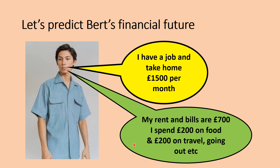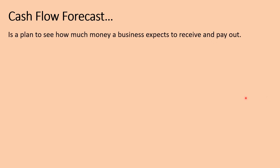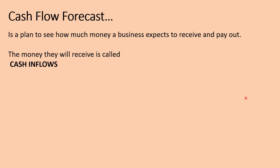We're going to look at businesses in just the same way as we've looked at Bert. We're going to learn some specific words to use when doing it and a process for how to do the calculations. Bear in mind it is just looking at how much money you've got in, how much money you've got out, and working out the difference. The money a business expects to receive has a special name — it's called cash inflows.